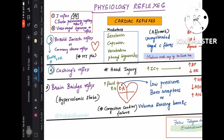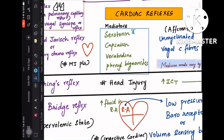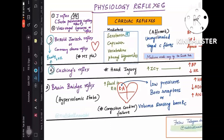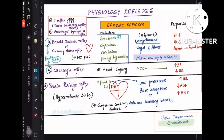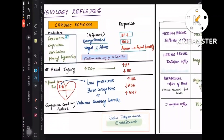The Bezold-Jarisch reflex or coronary chemo reflex is usually seen in MI and myocardial ischemia patients. The mediators are serotonin, capsaicin, veratridine, and phenyl biguanide — serotonin was asked as a question previously. The afferent for this reflex is unmyelinated vagal C fibers. The response is decreased heart rate, decreased BP, and apnea followed by rapid breathing.